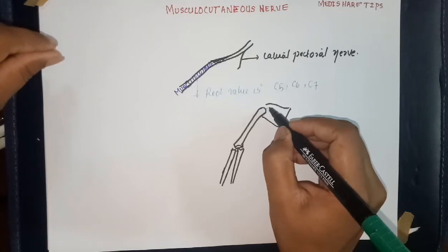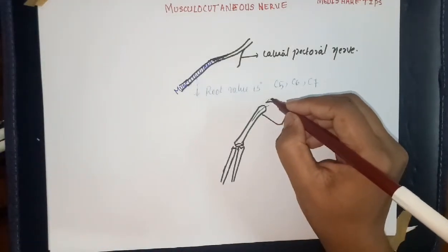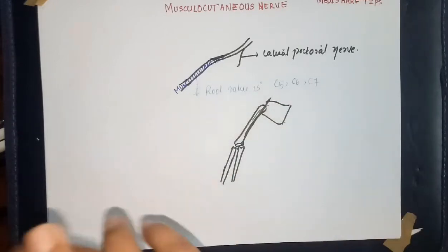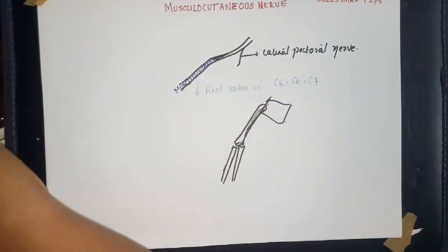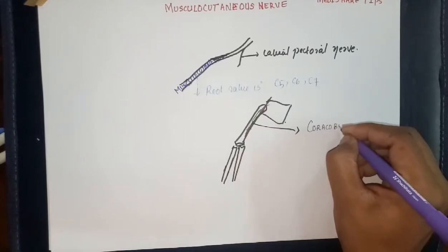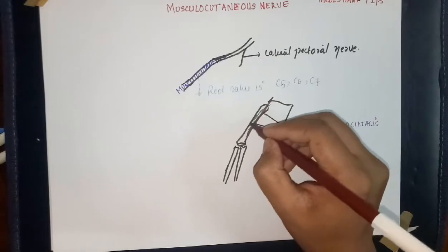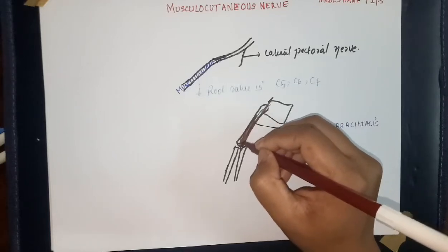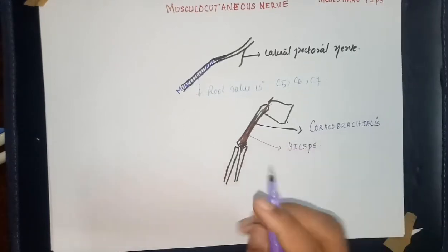The branches of the musculocutaneous nerve supply muscles: the coracobrachialis, which originates in the coracoid process and is inserted into the humerus. It also supplies the biceps muscle and a part of the brachialis.